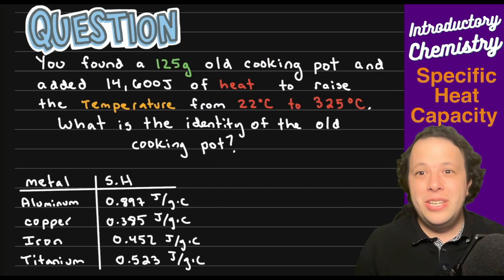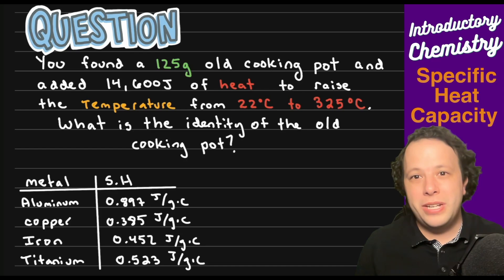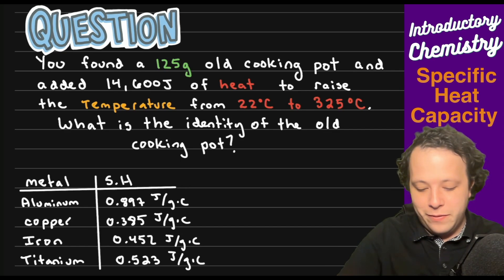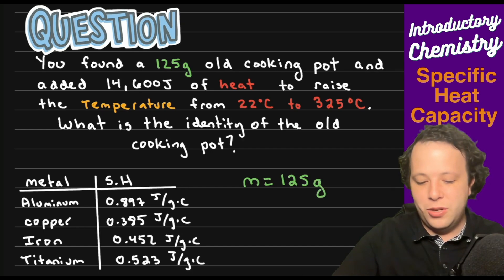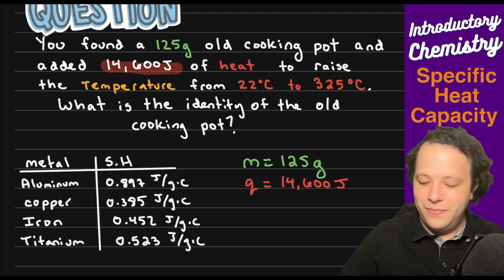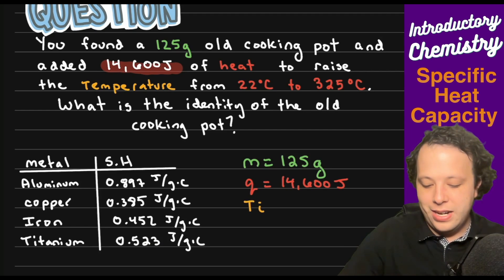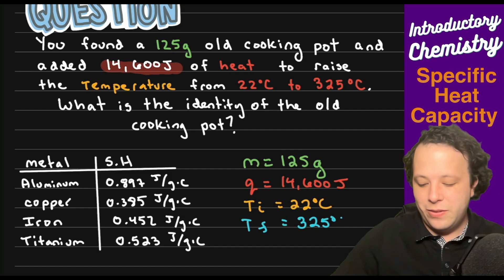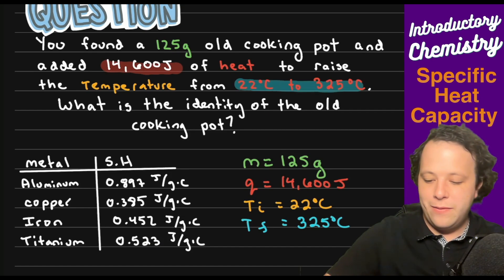Let's find out the identity of an unknown metal. You found a 125 gram old cooking pot and added 14,600 joules of heat to raise the temperature from 22 degrees C to 325 degrees C. What is the identity of the old cooking pot? You want to know what is it made out of, right? Do you want to know is it something that's worth keeping? One thing that we're going to do here is we're going to list out all of our important values.